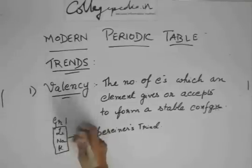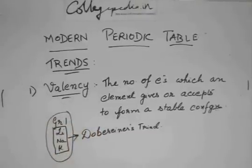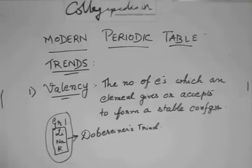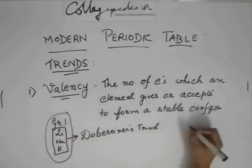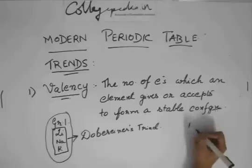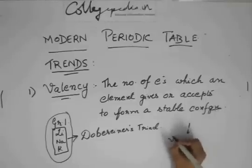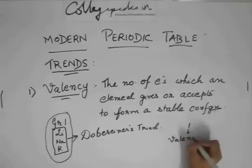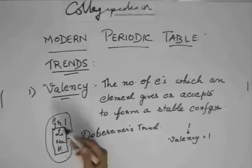And see, in the modern periodic table also, they are placed in group one showing similar properties. So, we know that these three have the same number of electrons in the outermost shell, which is one. So, it's less than four. So, its valency will also be equal to one. So, lithium, sodium and potassium all will have valency equal to one. And they belong to the same group.